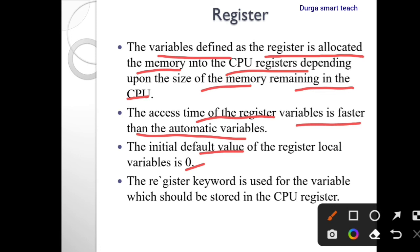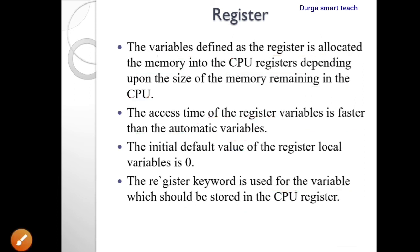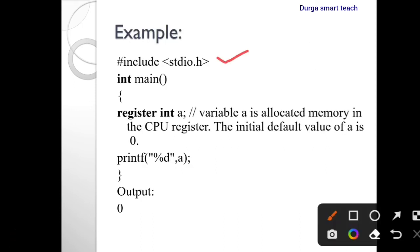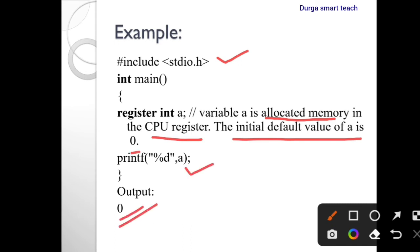The 'register' keyword is used for variables that should be stored in the CPU register. In the example, 'register int a' allocates variable a in the CPU register. The initial value of a is 0, so if we print a's value, 0 will be printed. Since we are only declaring the memory and not storing anything, the default value 0 will be displayed.